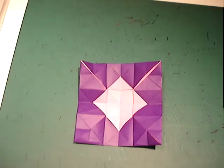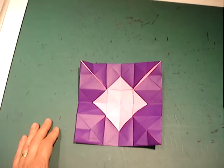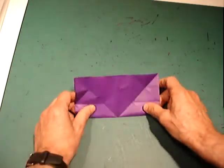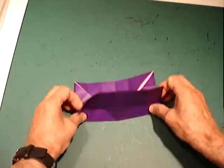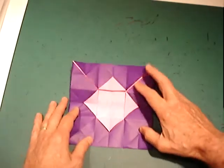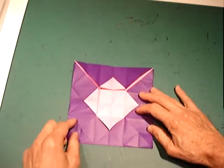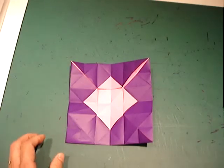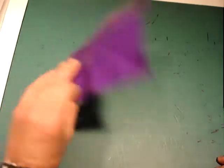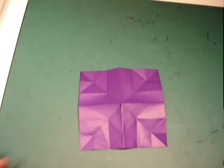This next set of steps forms the remaining faces. Fold the model in half along the horizontal and unfold. Repeat along the vertical. Fold and unfold. Turn over and fold and unfold along both diagonals.